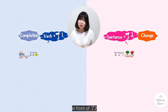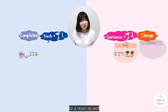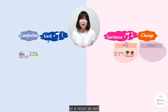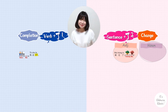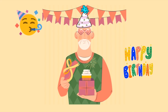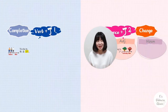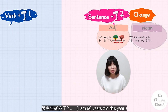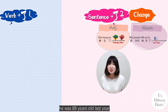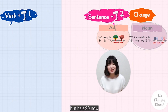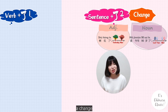In front of 了2, it can be an adjective or a noun as well. For example, 我今年90歲了. He was 89 years old last year, but he's 90 now — a change.